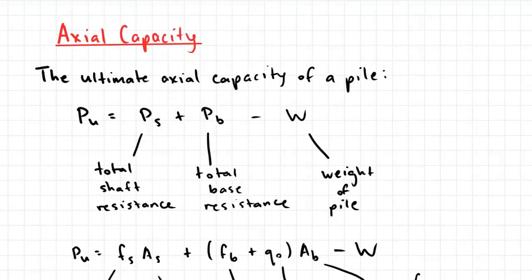The ultimate axial capacity of a pile is defined as the sum of the total shaft resistance, the total base resistance, subtracting the weight of the pile itself.